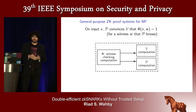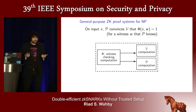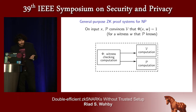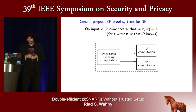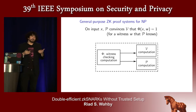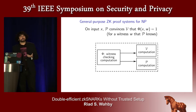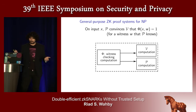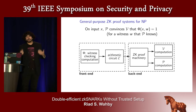When we talk about general-purpose proof systems, we usually mean proof systems for NP languages. That means there's some relation Φ — basically a computation that takes two values and returns true or false. The values are an input X from the verifier, and a secret witness W from the prover. Φ checks whether the witness is somehow correct in the sense that it corresponds to the verifier's input. At a high level, these systems all operate by turning computation Φ into two new computations — one for the verifier and one for the prover — happening in two stages: a front end and a back end.